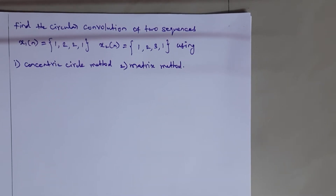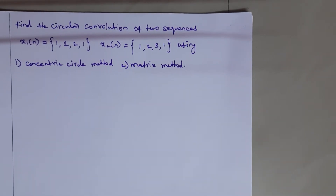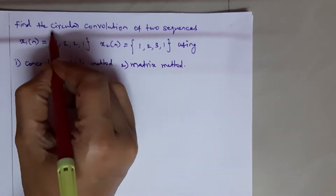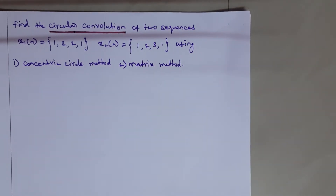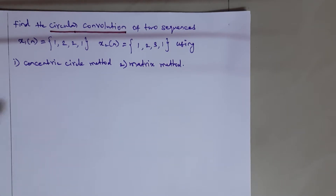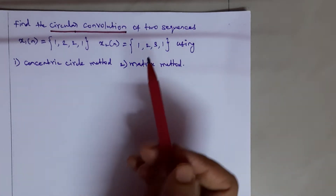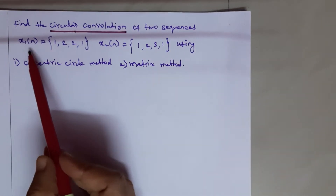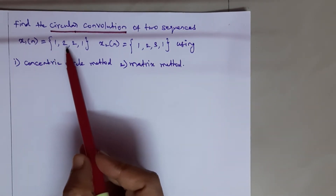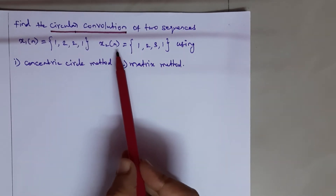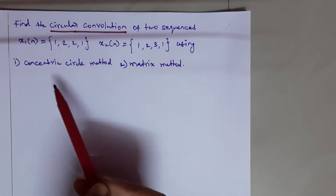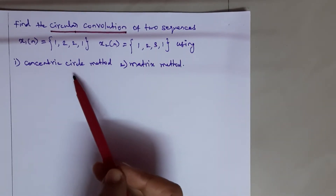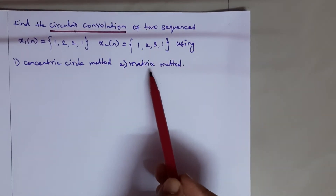Welcome to my channel. Today we are going to solve one circular convolution problem. In signals and systems, we studied linear convolution, but here we are going to perform the circular convolution of two sequences: X1(n) having values 1, 2, 2, 1 and X2(n) having values 1, 2, 3, 1. We will use two methods: the concentric circle method and the matrix method.